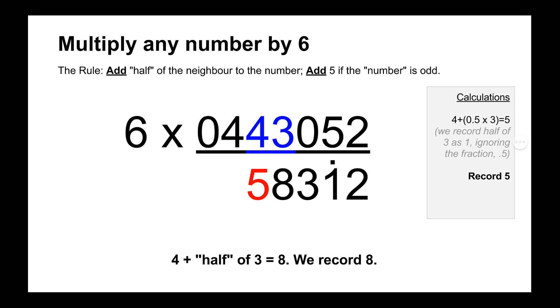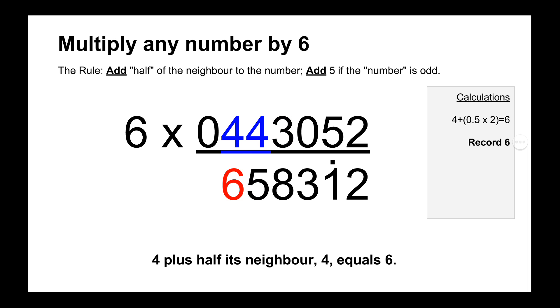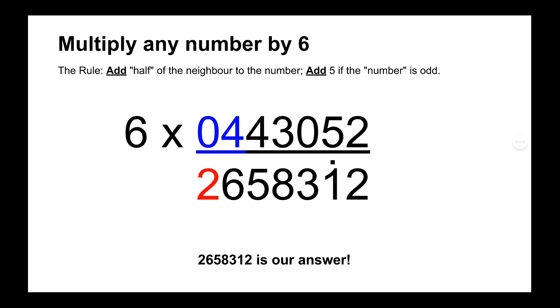And then we move across again and we have 4. So we do half of 3 is 1.5. But we ignore the fraction. So we just have 1. So we do 1 plus 4. And because 4 is an even number, we don't have to add the 5. And then we move across to the next digit, which is another 4. And we do half of 4, which is 2. And we add on to 4 to get 6. And then we move across again to 0. And we do half of its neighbour. 4 is 2. Obviously, 2 plus 0 is 2. So there's our answer. It's 2,658,312. And that's our answer.